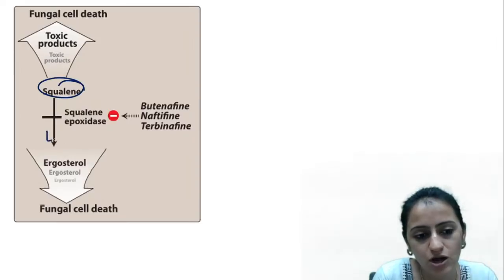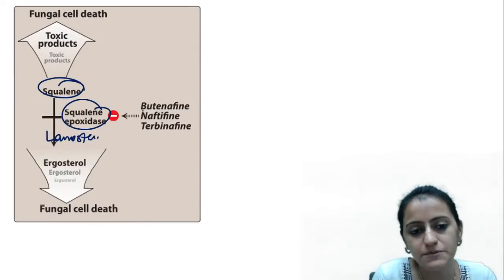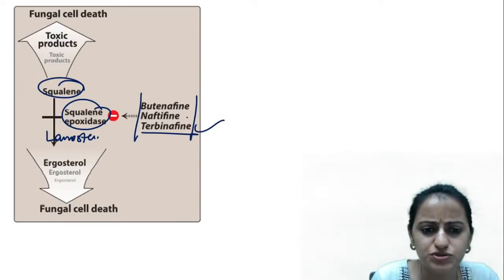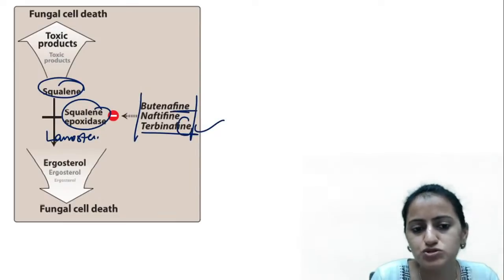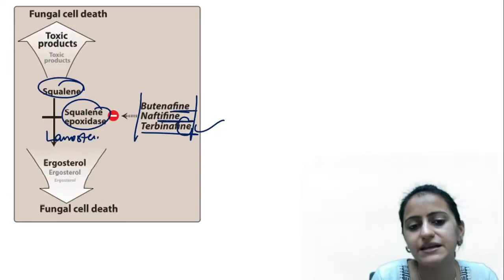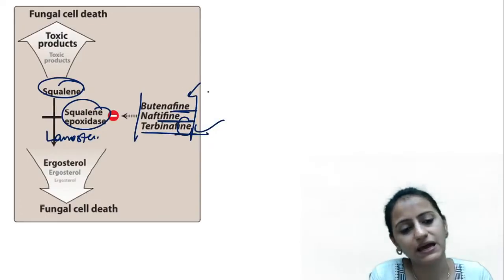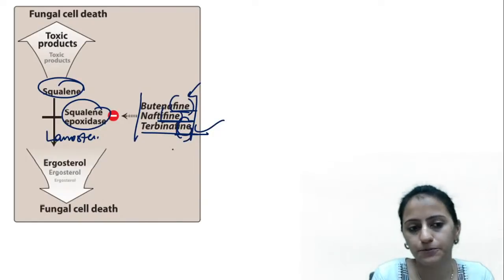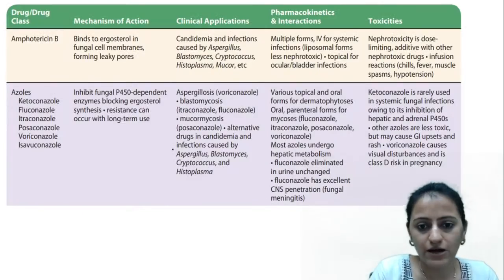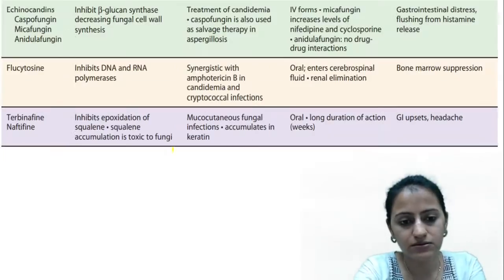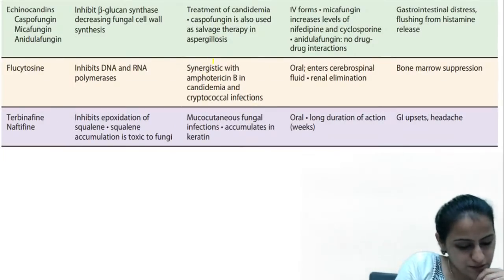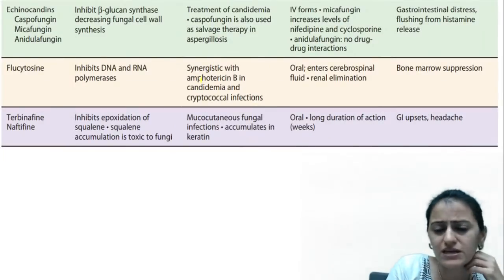If you see an image showing squalene to ergosterol with lanosterol in between: squalene epoxidase is inhibited by terbinafine. Other fin-wala drugs — butenafine, naftifine, terbinafine — share this mechanism. Whenever you get a question on mechanism of action, try to rhyme it with the drug you already know.